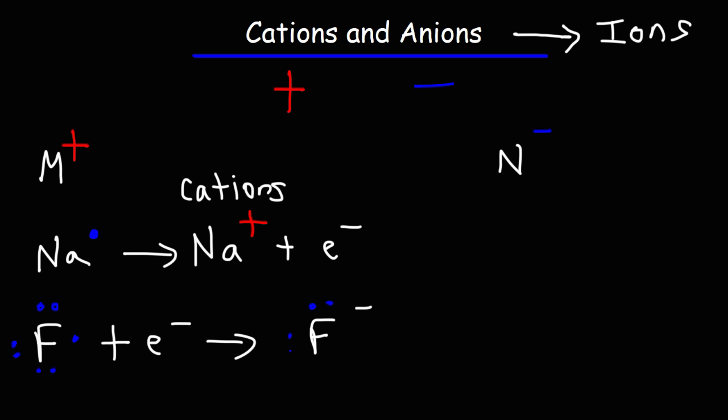And now it has a negative charge. So this ion is known as an anion because it has a negative charge. And so that's the difference between cations and anions.